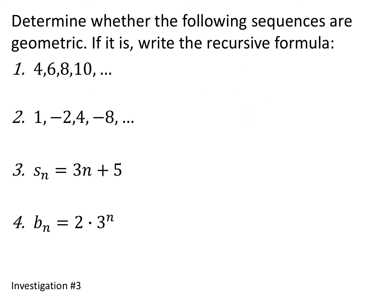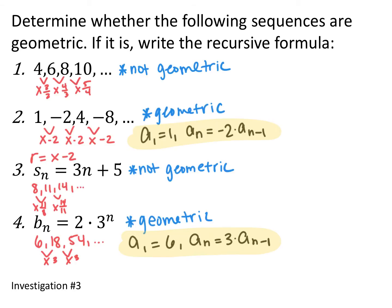Given these four sequences, decide whether each is geometric or not, and if it is geometric, write out the recursive formula. Go ahead and pause the video and try these four. So the first sequence — you're adding the same thing every single time, adding 2 every single time. The common ratio is not the same, so it is not geometric.